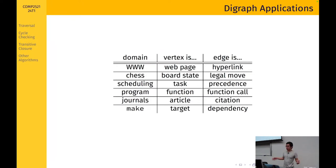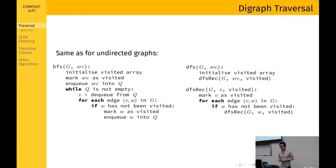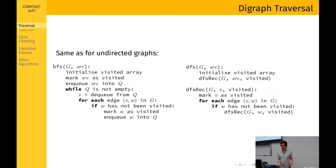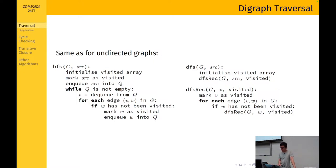The first digraph algorithm we'll talk about is digraph traversal. It turns out that traversing a directed graph is the same as for an undirected graph. With BFS, we create a visited array, mark the starting vertex as visited, and enqueue the vertex. While the queue is not empty, we remove a vertex from the queue, and for each edge starting from the dequeued vertex, if the neighbor hasn't been visited, we mark it as visited and enqueue it. For DFS, here is the recursive version with a helper function that receives the visited array and starting vertex.